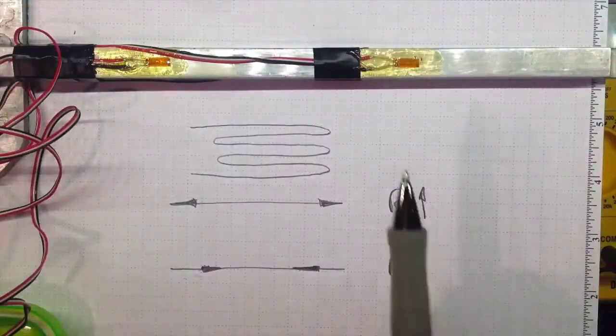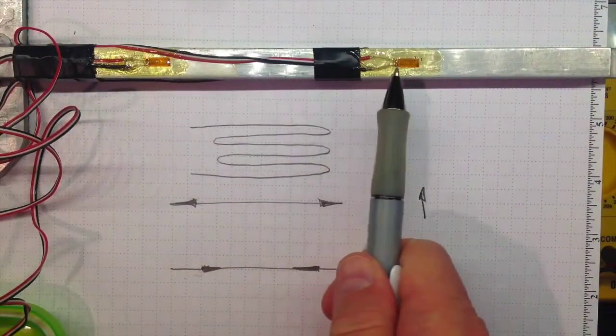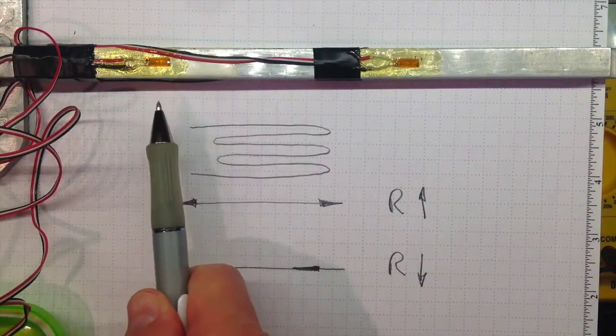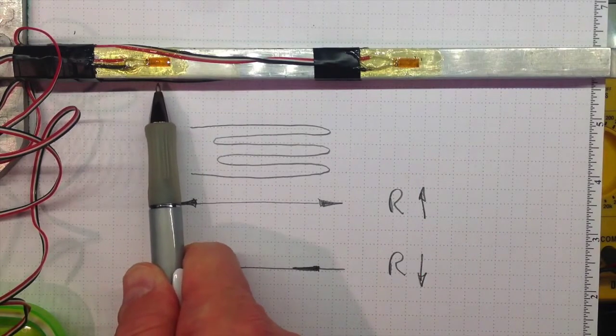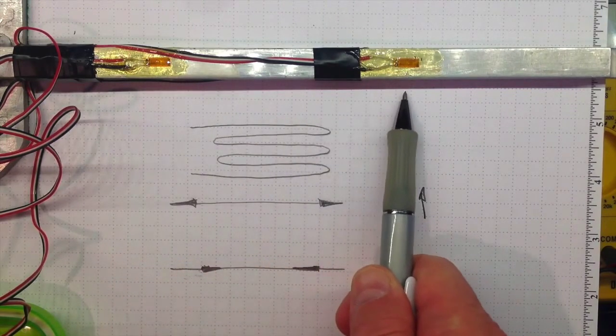If the bar bends like this then the gauges here on top of the bar will be stretched and if there were gauges, and there are on the bottom of the bar, they'll be compressed.